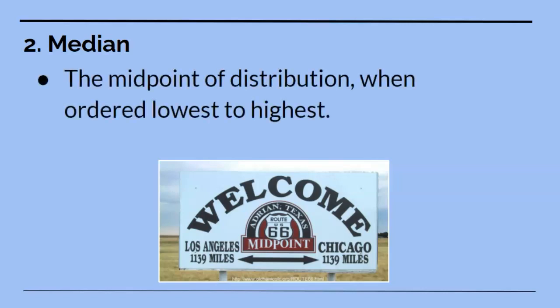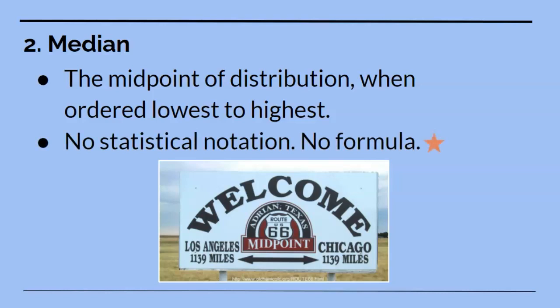The definition of median is the midpoint of a distribution or a set of numbers. The key part, though, of this definition is that it needs to be ordered lowest to highest. Interestingly, there is no statistical notation for median. We simply write out the word median.